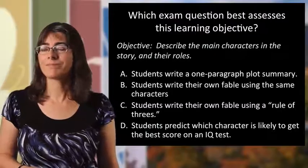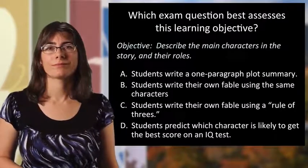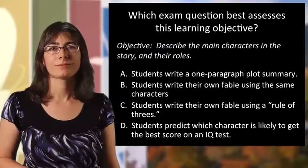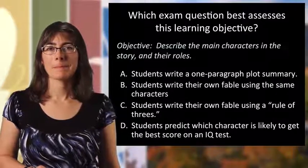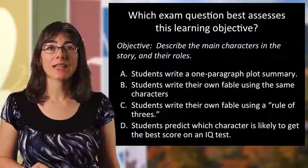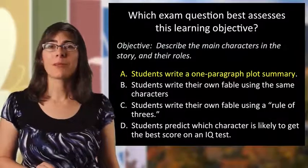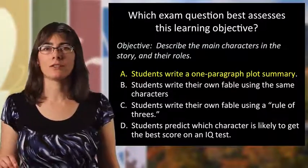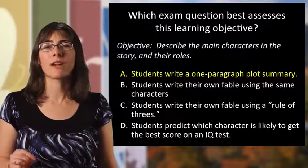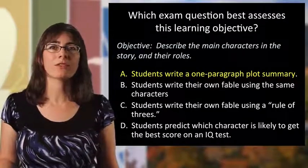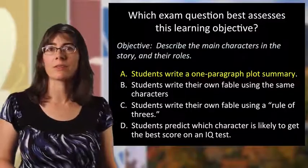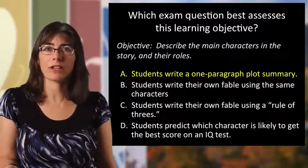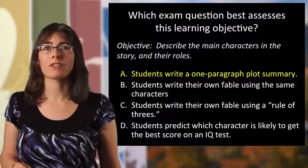Here are some choices — let's see which one you think best applies. The answer is A: students write a one-paragraph plot summary. That's going to really test whether they got the main point of the story in a way that's not identical to their learning objective, because if I just write an exam question that's the exact same as the learning objective, I've kind of given away what my assessment is going to be. Note that B and C require the student to have achieved this objective, but they really go a step beyond just the achievement of that objective.